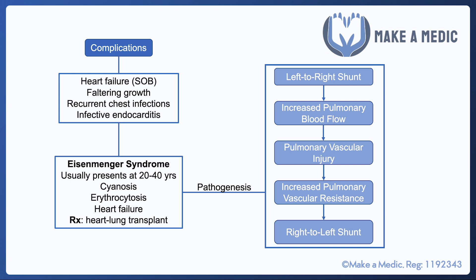As pulmonary vascular resistance increases, the right heart has to pump much harder to get blood through to the lungs. Over time, the right heart becomes hypertrophic, and it reaches a threshold around 20 to 40 years of life where the right heart is actually stronger than the left. This means the shunt gets reversed — deoxygenated blood from the right side of the heart passes through the defect into the left side, which is why it causes cyanosis.